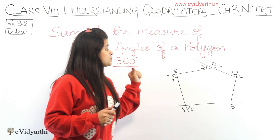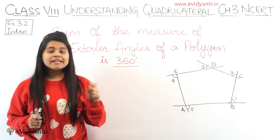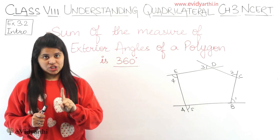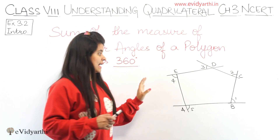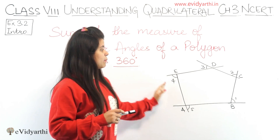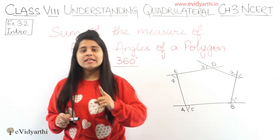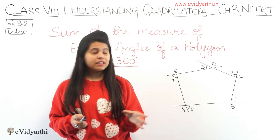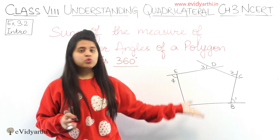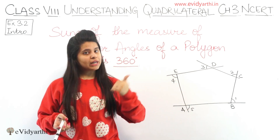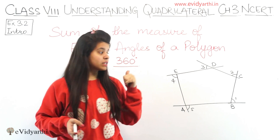Okay? So, is property ki wajah se aap ek aur cheez kar sakti hain. That is, agar aapko saare exterior angles given hain lekin ek exterior angle given nahi, to aap usko equal rakh ke angle find kar sakti ho.